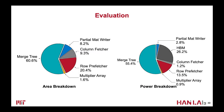We also conduct the area and power breakdown of our design. For area, the largest part is the merge tree, and the second largest is the row prefetch. For power consumption, the largest part is also the merge tree, and the second is the high bandwidth memory. The power of the row prefetch becomes the third largest.